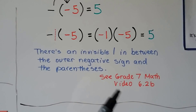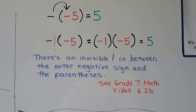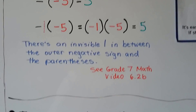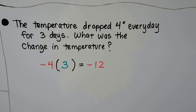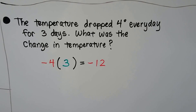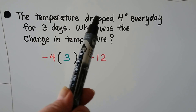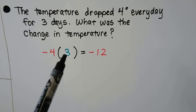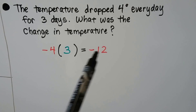There's a video, Grade 7 Math Video 6.2b, that goes into this at a higher level and covers the distributive property with variables. Here's a word problem: the temperature dropped 4 degrees every day for 3 days. What was the change in temperature? We need to recognize that 'dropped 4 degrees' means negative 4, and for 3 days we have negative 4 times positive 3. The answer is negative 12.